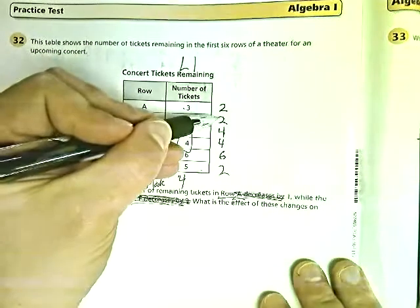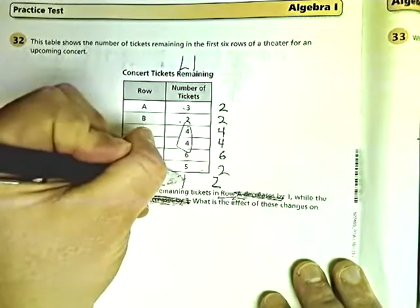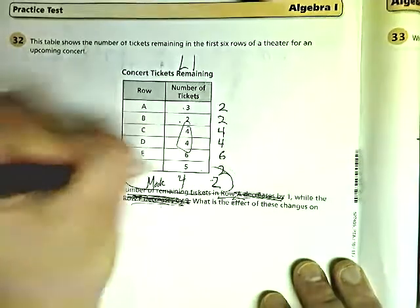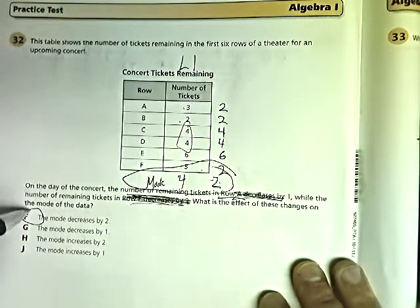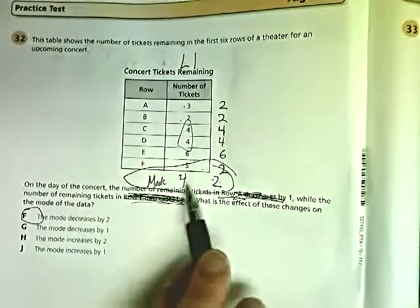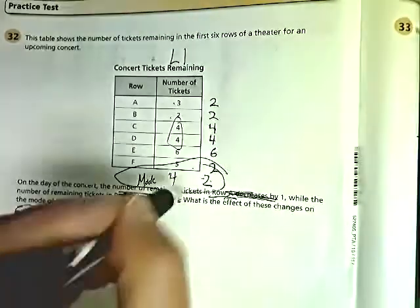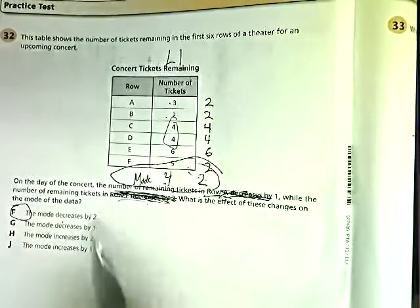My new mode, 1, 2, 3, 2's is now 2. So this is the old mode. This is the new mode. So it decreased by 2. So the mode decreases by 2. Now you have to be very careful. Don't say it increases by 2 because they change by 2. You have to think. This is what it started as. This is what it became. So it actually went down by 2.